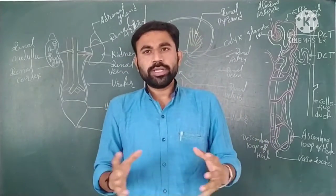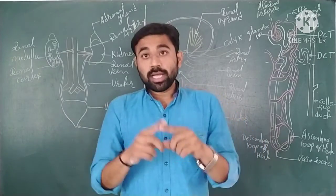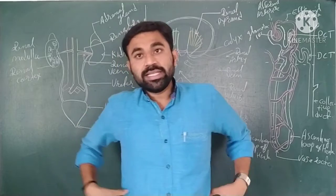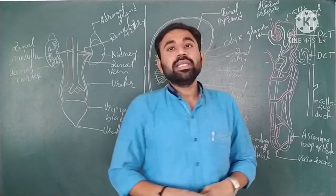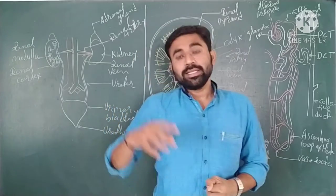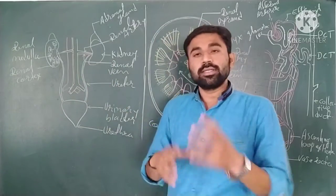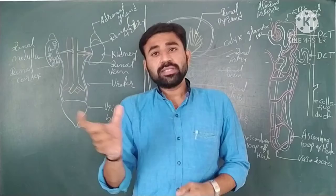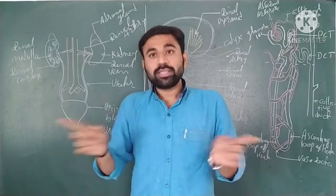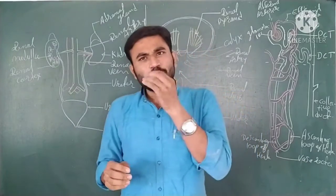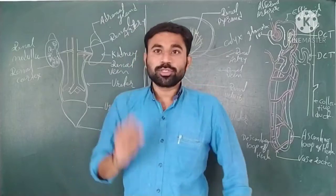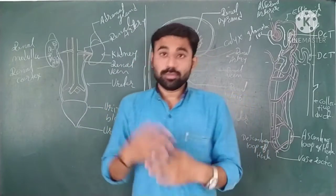The kidney is situated in the abdominal cavity, specifically in the lumbar region on the lateral side of the vertebral column. The kidney is somewhat reddish or brownish in color. Its length is almost 10 to 12 centimeters, width is about 5 to 7 centimeters, thickness is almost 3 centimeters, and each kidney weighs approximately 120 to 170 grams.